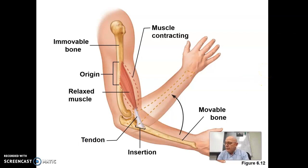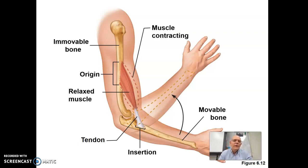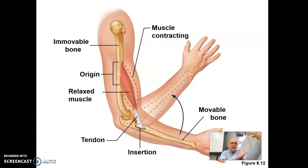Number 17: muscles can only pull. Your biceps pulls your arm up; your triceps pulls it back down. It's not like your biceps pushes it back down — you can't push. It's like pulling on a rope: you can pull on a rope but you can't push on a rope. If you have a horse on a rope, you can pull it forward but you can't push it backwards. Muscles can only pull, and that's why you have to have pairs. The biceps pulls it one way, the triceps pulls it back, and using those two muscles to balance each other you can stop halfway in between.